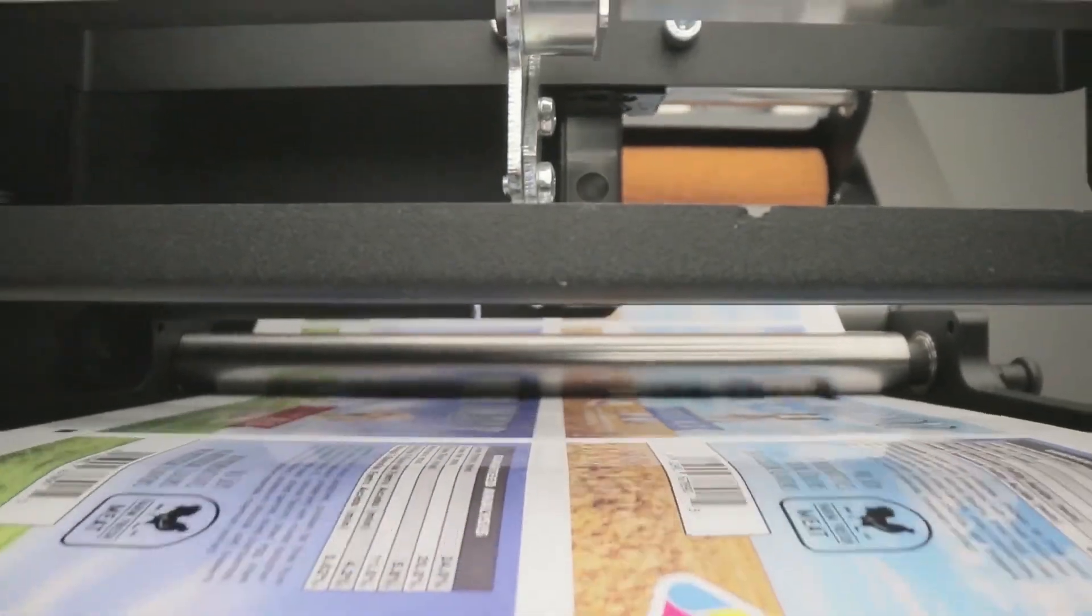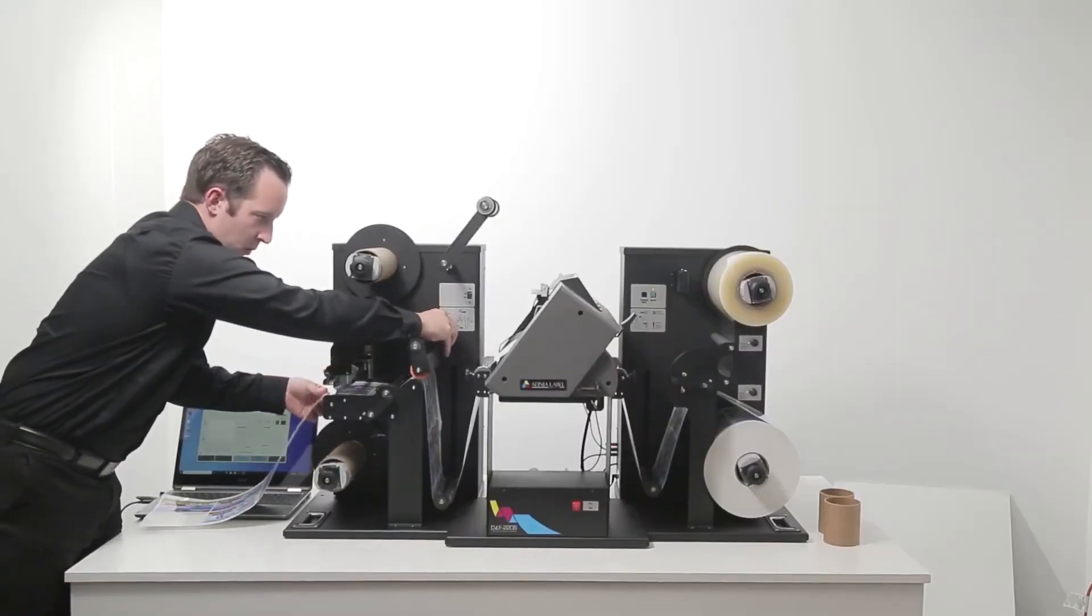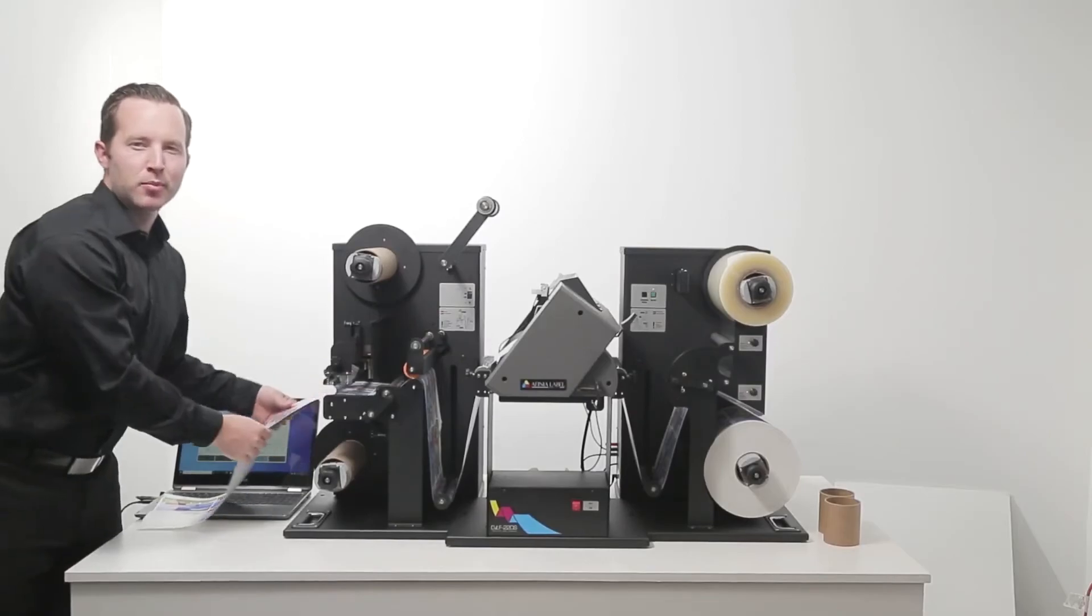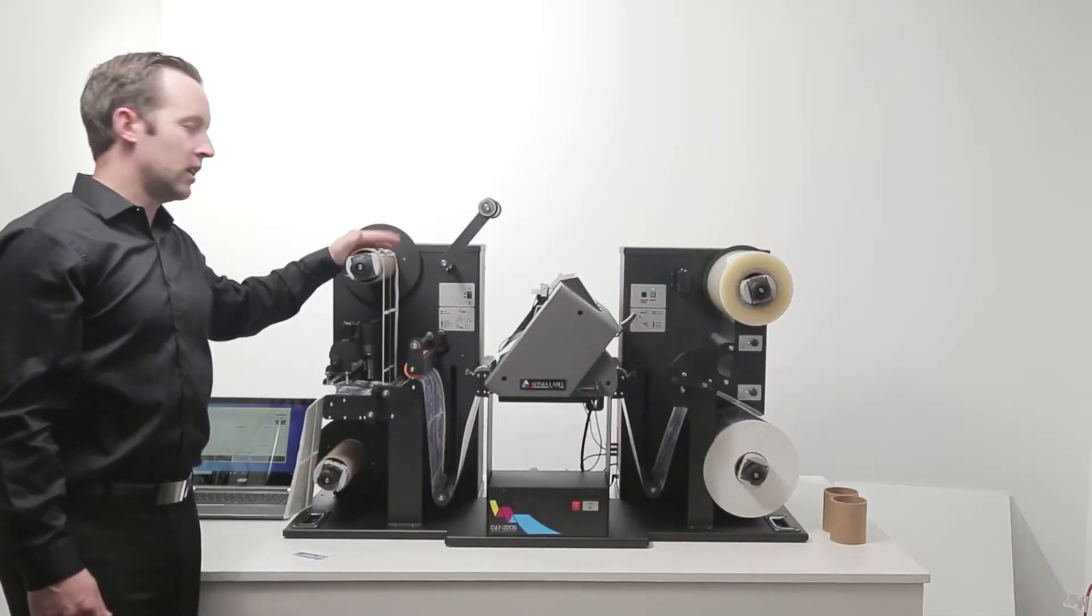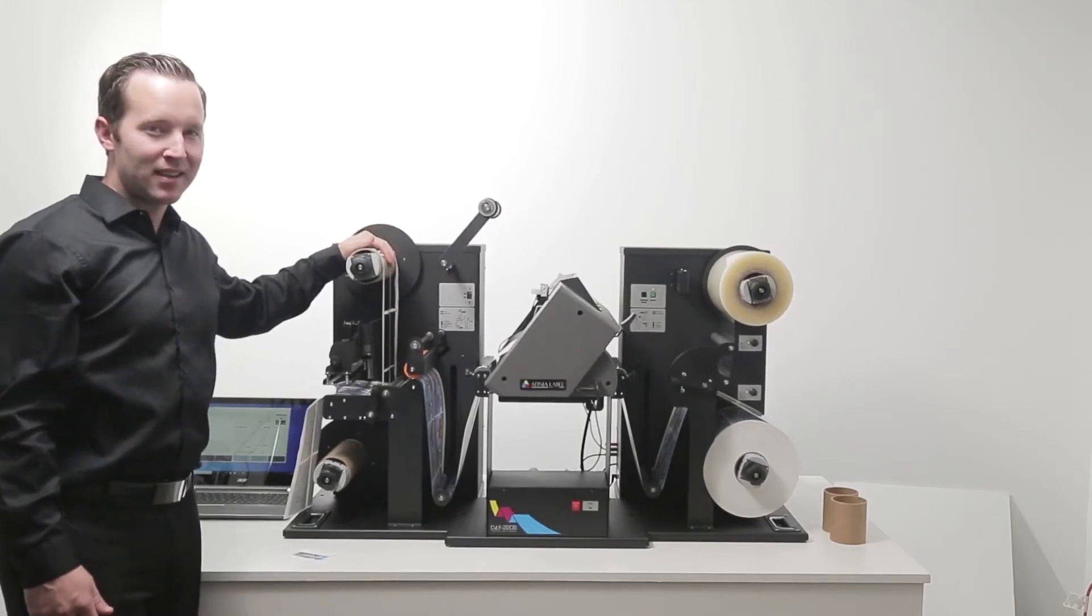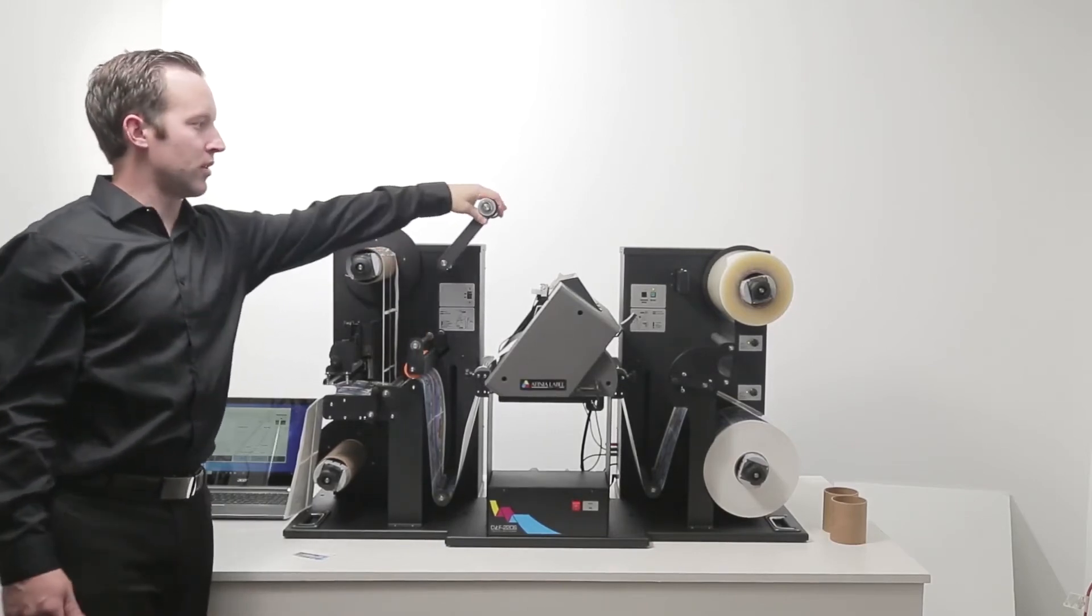Pull the media all the way through and then lower the sponge and lock it into place. Separate the waste from the labels and pull it up and over the empty core. Now it needs to be nice and tight and then be sure to lower this pressure arm.